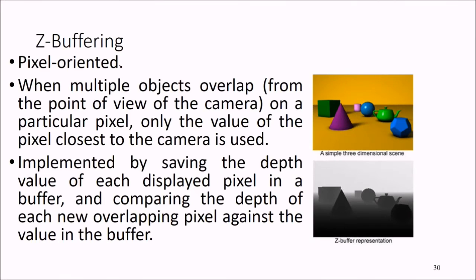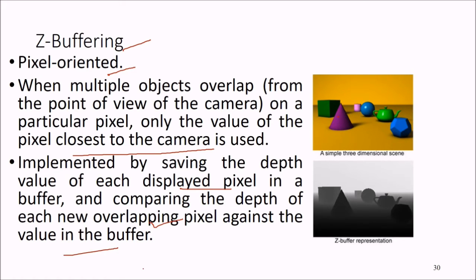Z-buffering is pixel-oriented. When multiple objects overlap from the point of view of the camera on a particular pixel, only the value of the pixel closest to the camera is used. This is implemented by saving the depth value of each displayed pixel in a buffer and comparing the depth of each new overlapping pixel against the value in the buffer.